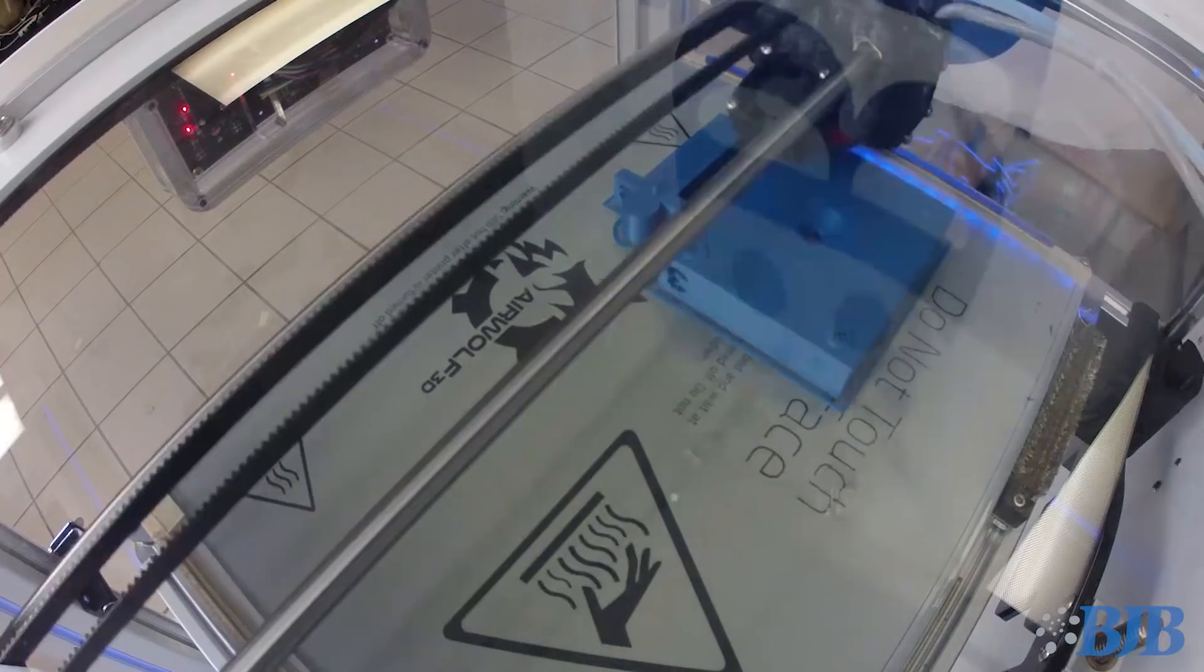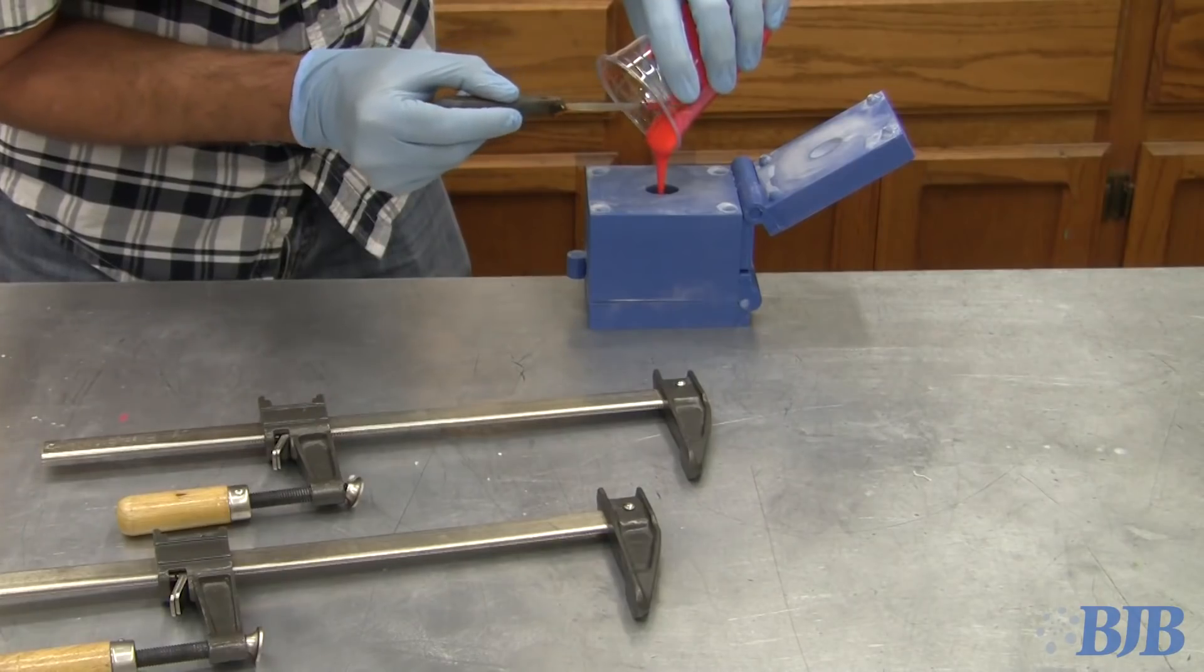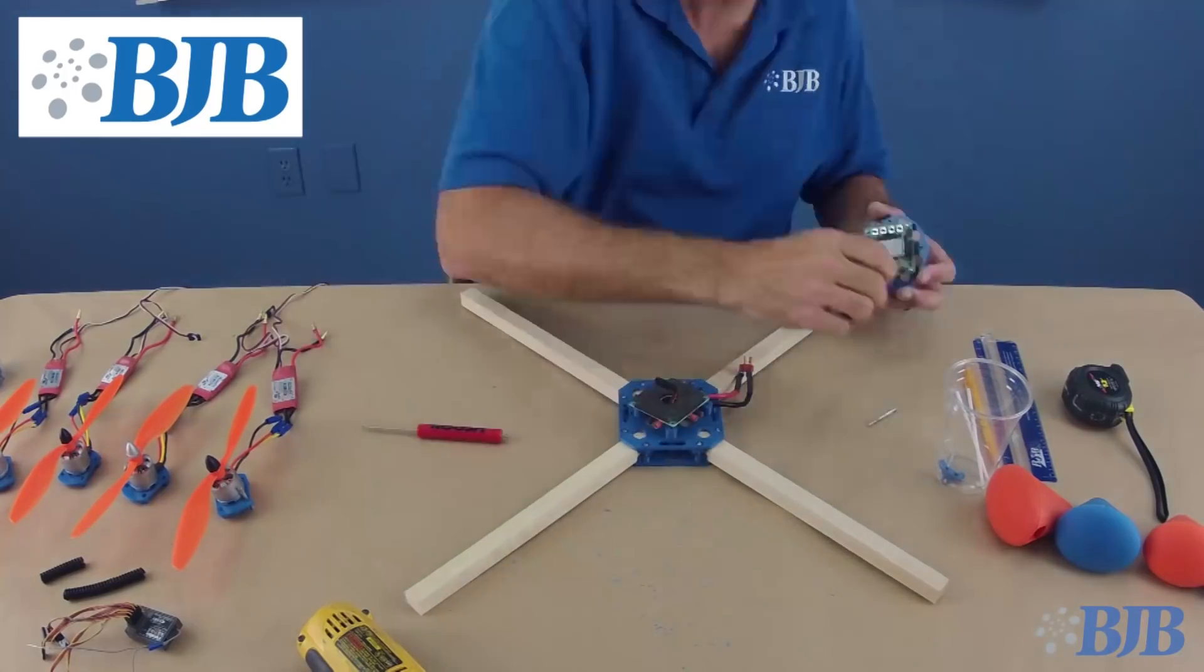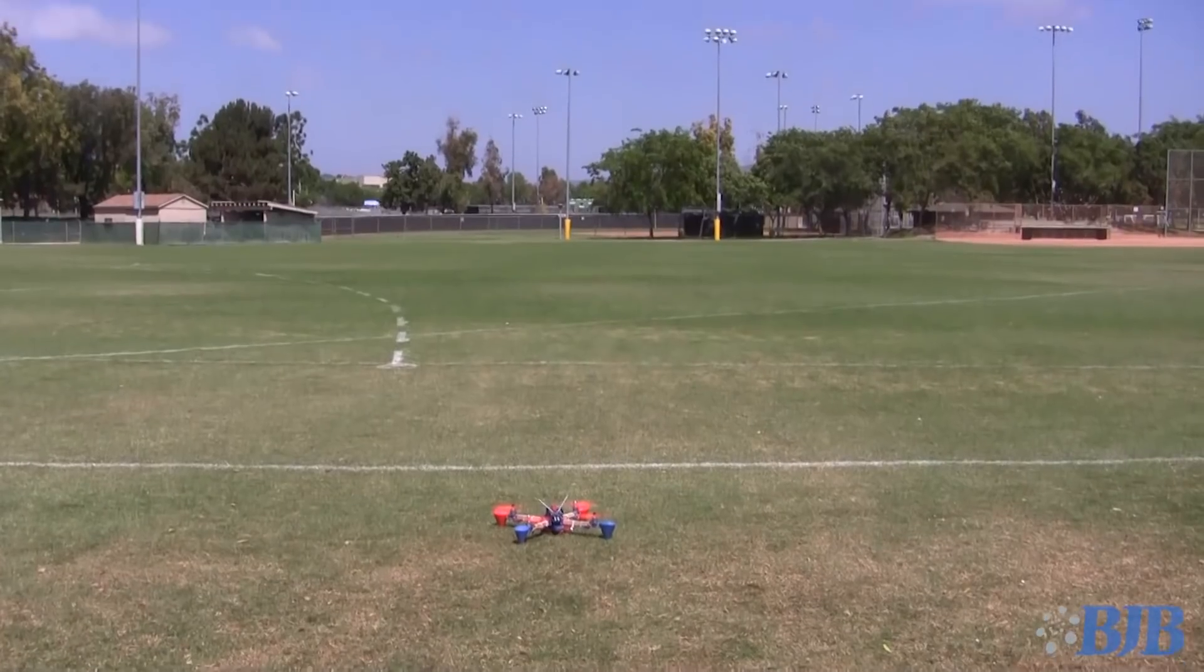A couple years ago we did a video on making a 3D printed mold to cast flexible polyfoam into. These were to make lightweight landing pads for a radio-controlled quadcopter. You should check it out. It's a pretty cool video.